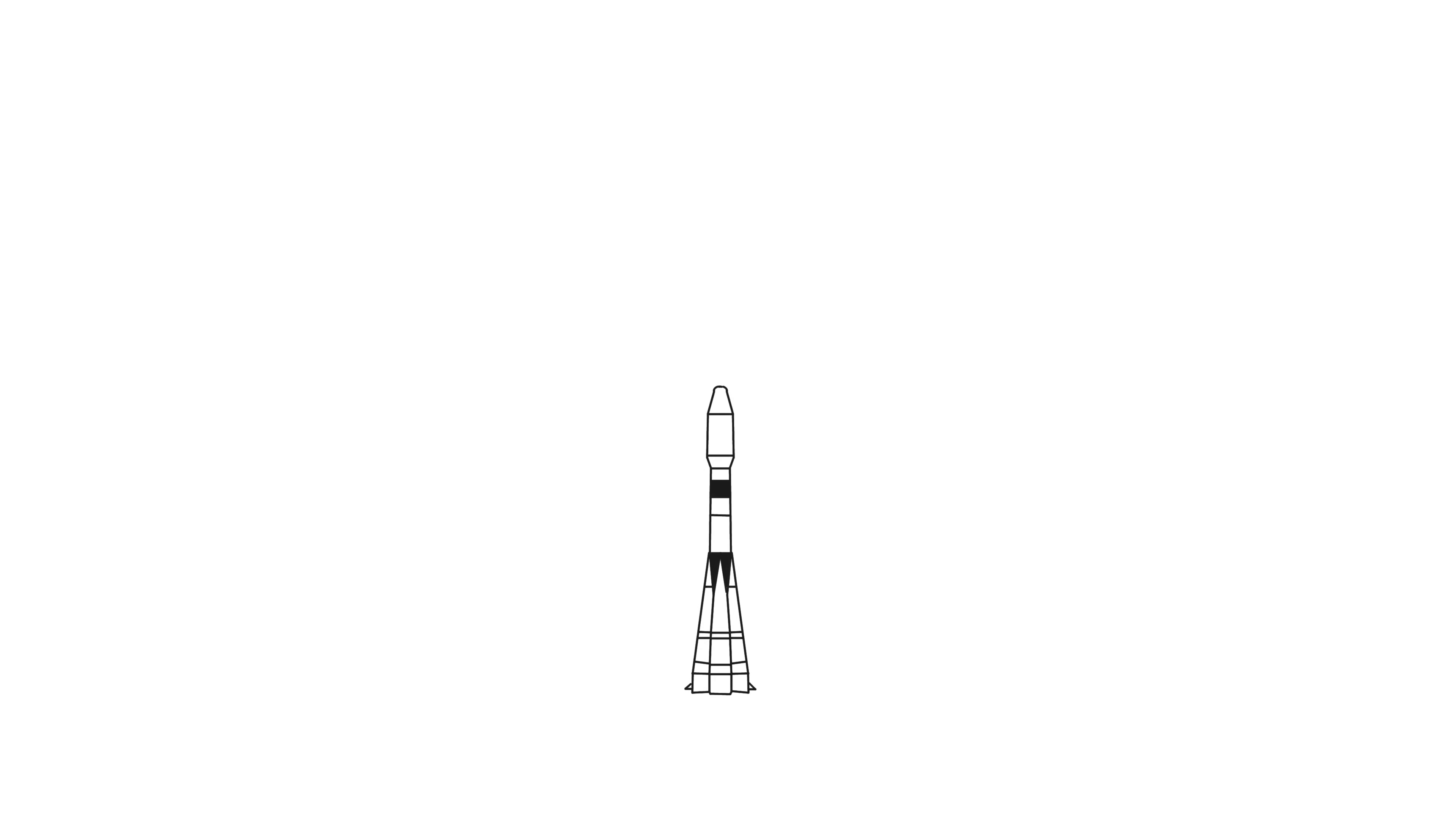Rockets burn enormous volumes of fuel, using the momentum of the resulting high-speed exhaust to push the rocket into orbit. Since a rocket is intended to fly in the vacuum of space, it has to carry both its fuel and its oxygen with it in order to burn the fuel and generate exhaust.